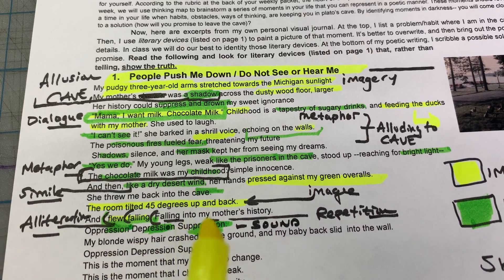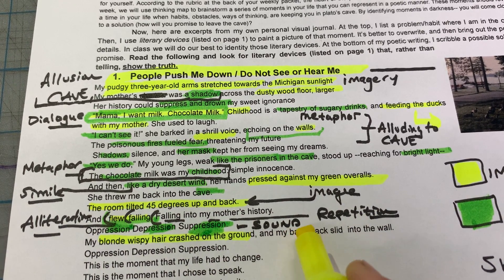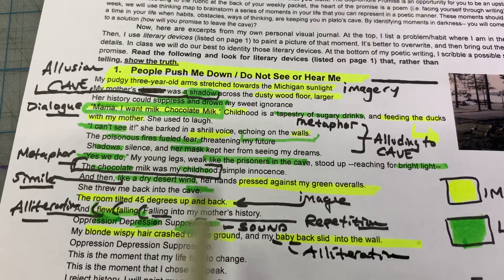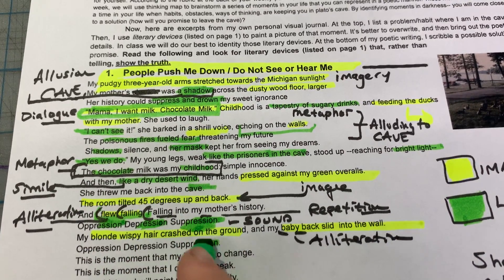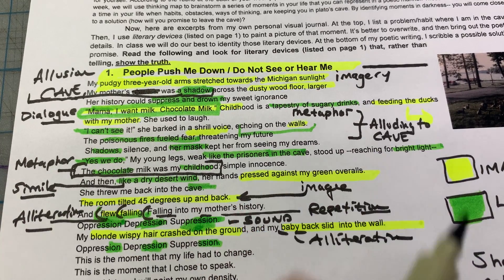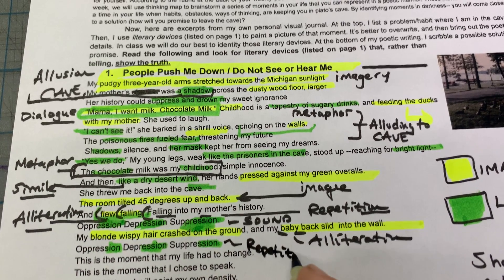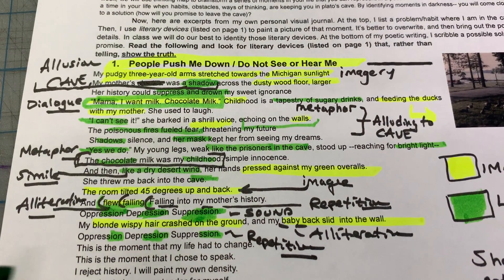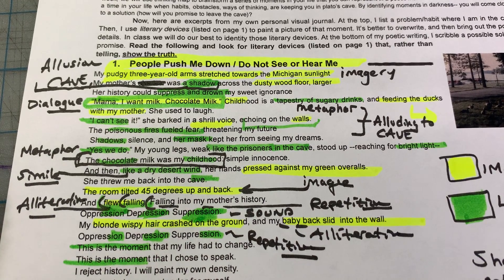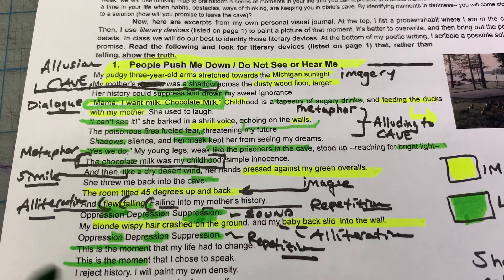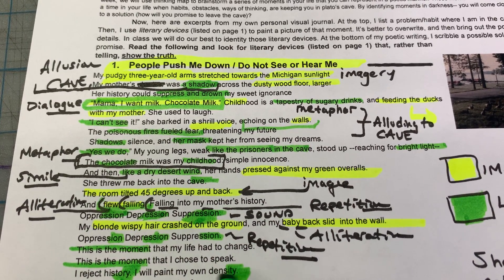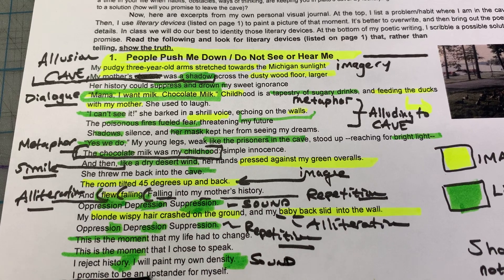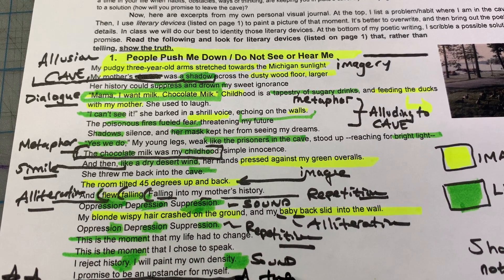'My blonde wispy hair crashed to the ground and my baby back slid into the wall' — imagery. 'Baby back' is alliteration. 'Oppression, depression, suppression' — this is repetition; you repeat things that are important. 'This is the moment my life had to change. This is the moment I chose to speak. I reject history. I will paint my own destiny.' History and destiny have similar sounds — that's sound working in your favor. 'I promise to be an upstander for myself' — and there you have the theme.